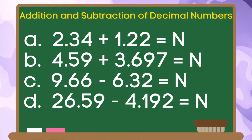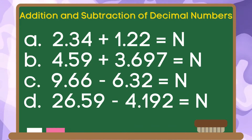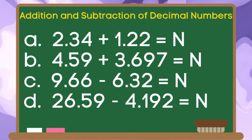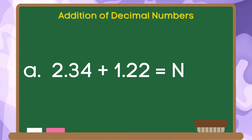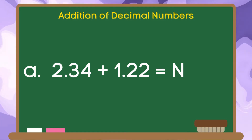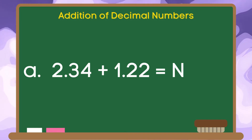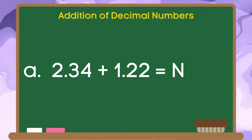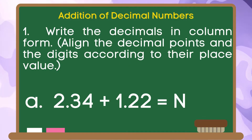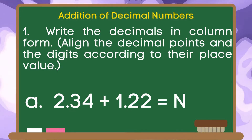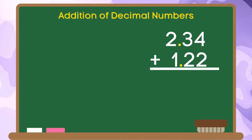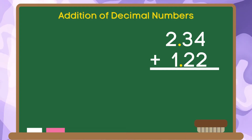Let us get the sum or difference of the following decimal numbers. Find the sum of 2 and 34 hundredths and 1 and 22 hundredths. Let us do step 1: write the decimals in column form. Align the decimal points and the digits according to their place value.